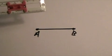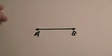For this next construction, we're going to bisect a given line segment. So we've got line segment AB.